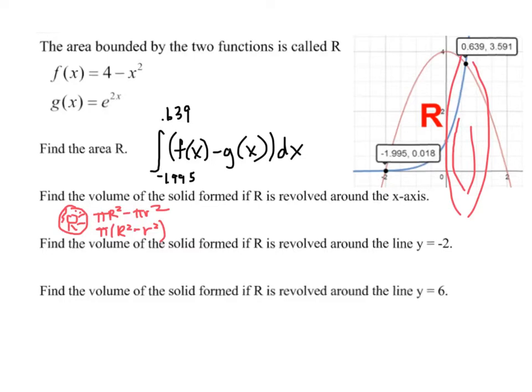Okay, so our integral is going to be pi, same bounds. We get negative 1.995 and 0.639. And we're going to have the big radius, which we said was f of x squared,